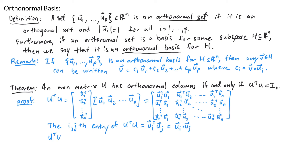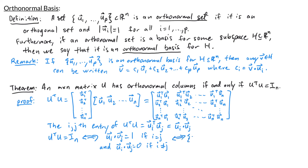U^T·U equals the identity matrix if and only if the diagonal entries equal 1 and off-diagonal entries equal 0 — meaning ui·uj = 1 when i = j and ui·uj = 0 when i ≠ j. This is true if and only if {u1, ..., un} is an orthonormal set. That completes the proof, and in the next video we'll look at orthogonal projections.